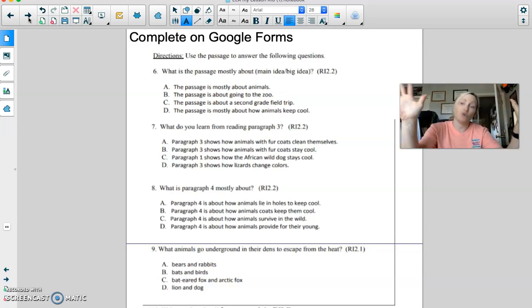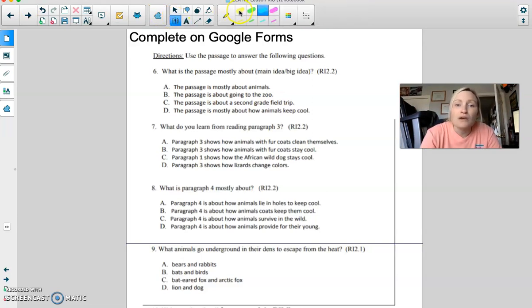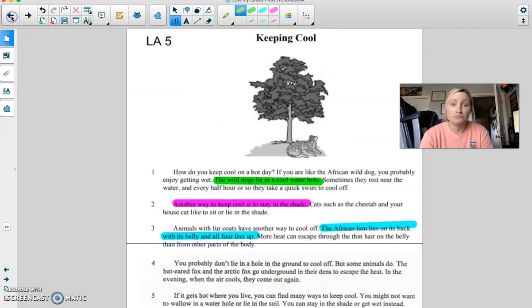You got this. So, let's read through our questions. It says, what is the passage mostly about? So, we want to think main idea, big idea. What is that author trying to tell us about this passage? Let's go back. What do you learn from reading paragraph three? So, what I would do is go back here and look. You got to look in paragraph three. What is paragraph four mostly about? We're going to go over here and look. You're going to have to reread paragraph four. See what it's mostly about.